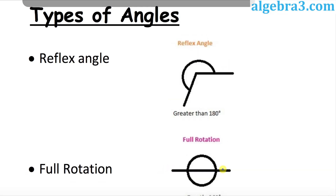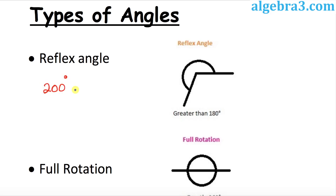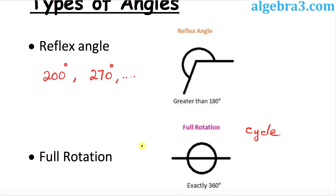The next example is the reflex angle. The reflex angle is always greater than 180 degrees, so it could be 200 degrees, 270 degrees, and so on. Any angle bigger than 180 degrees is called a reflex angle. As for full rotation, that means you have completed one full cycle, which amounts to exactly 360 degrees.